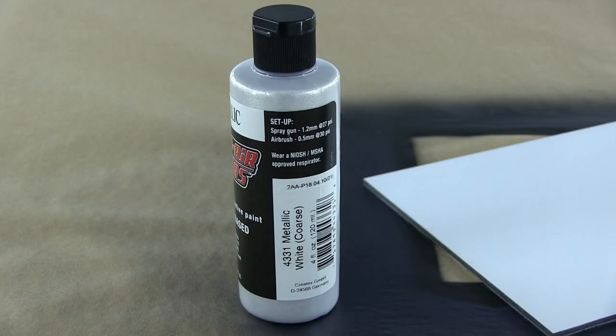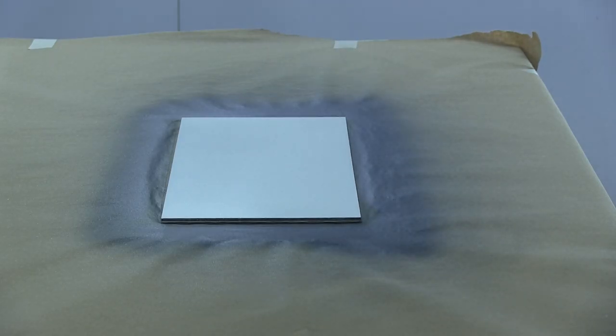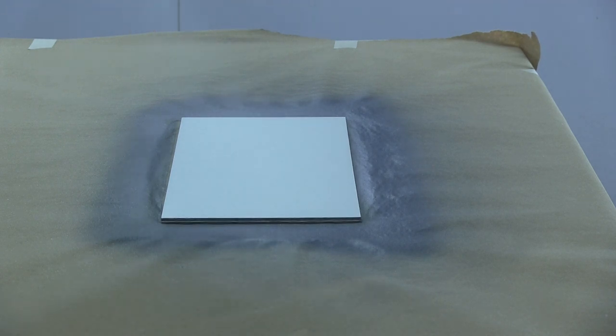So now I'm going to take another panel using the same metallic white coarse. Exactly the same, just spray a couple of nice light coats. 50% fan overlap will be fine, usual spraying rules apply.